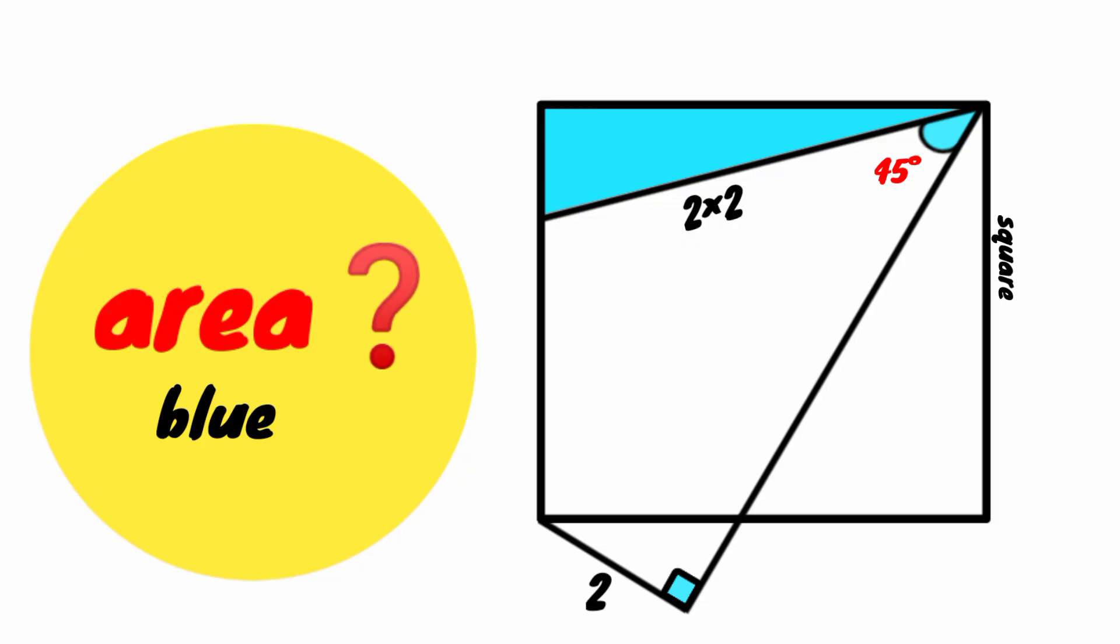That is the area of this triangle. We have the length of this side to be 2 times 2 which is 4. The length of this side is 2. This angle has its size to be 45 degrees and we have here a right angle.